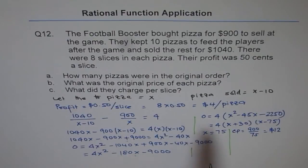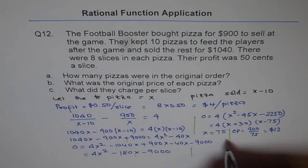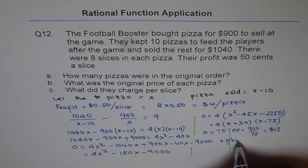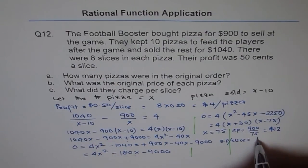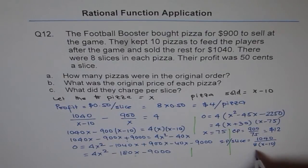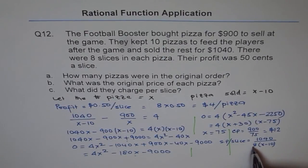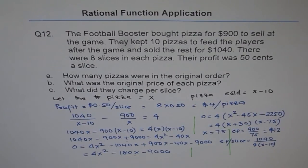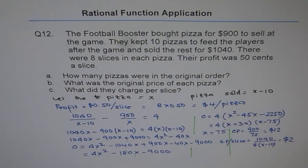What did they charge per slice? The selling price per slice equals $1040 divided by (8 times (X minus 10)). Plugging in X equals 75: 75 minus 10 is 65, so we get $1040 divided by (8 times 65), which gives $2. So they charged $2 per slice when they sold the pizza.